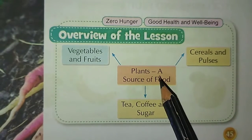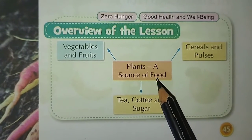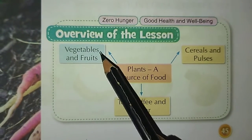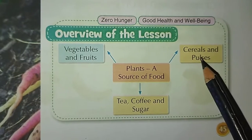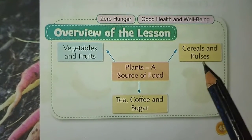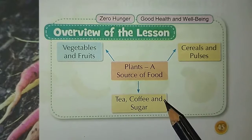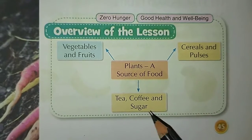Overview of the lesson — Plants as a source of food: vegetables and fruits, cereals and pulses, tea, coffee and sugar.